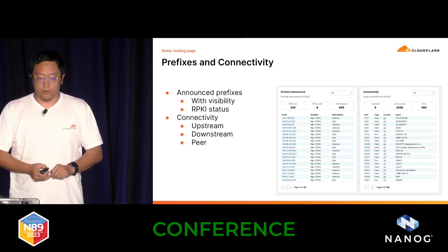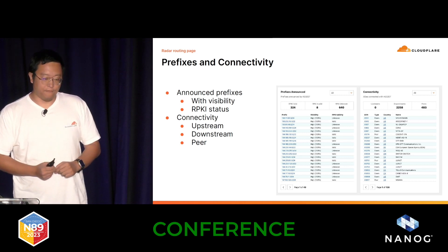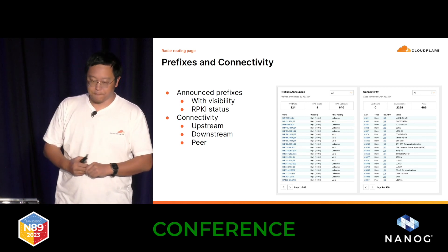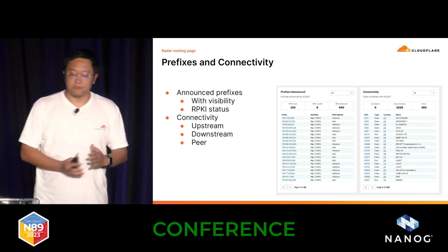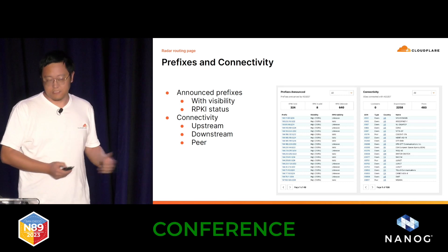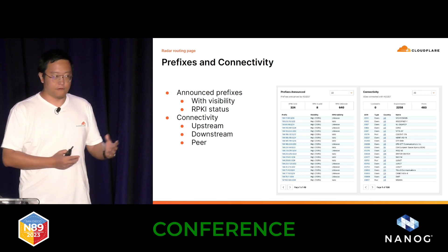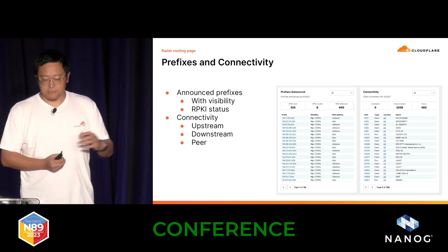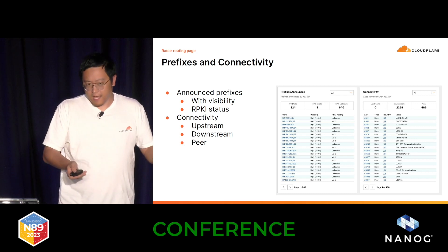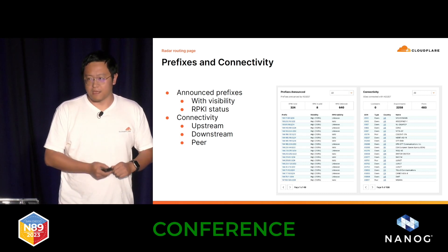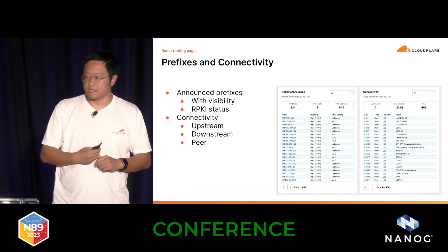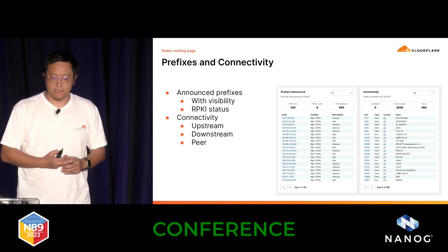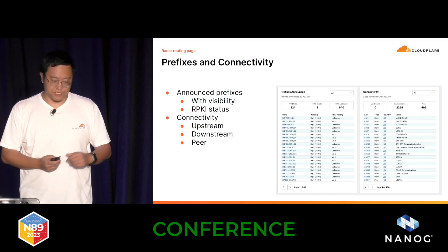We also have a tab for connectivity, where we can show you the upstream, downstream, and peers that we inferred for your network's connectivity. This is based on inference, so there can be some inaccuracy. If you see data that doesn't match what you expect, please reach out.